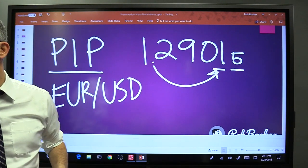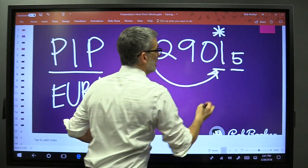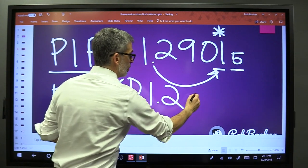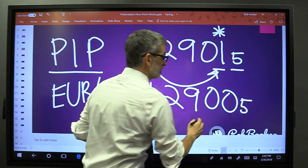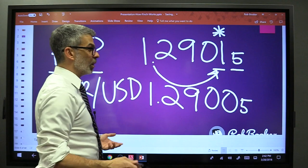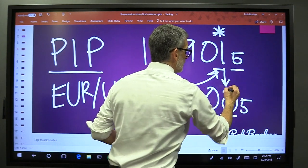So Nate, which one is the pip? The one is the pip. And if that moves from 1.2901 to 2900, how many pips have we moved down? One. We've moved one pip down because we went from one to zero.